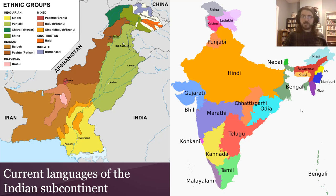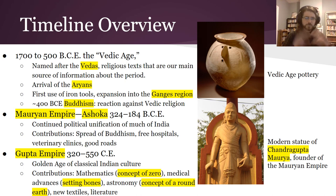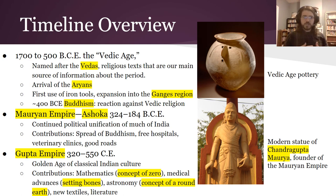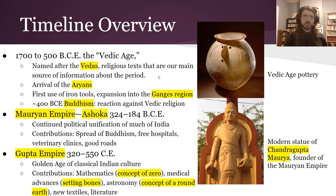From about 2000 BCE — that's when we first see horse bones show up in this area — we think that's probably when this different language group first made their arrival. It's called the Vedic Age, named after the Vedas, a religious text that is our main source of information for the time period.